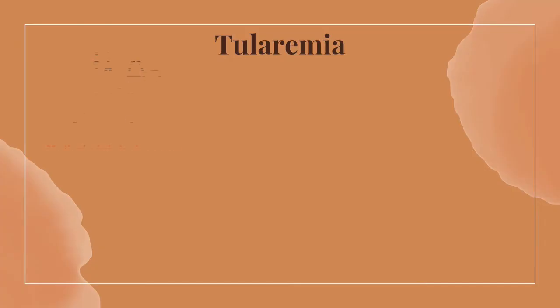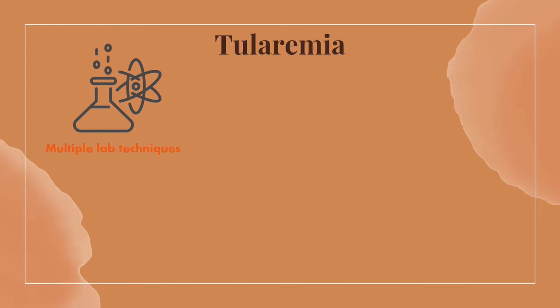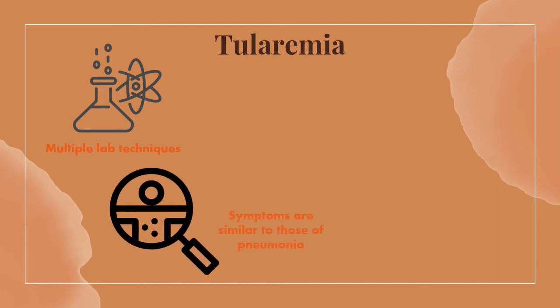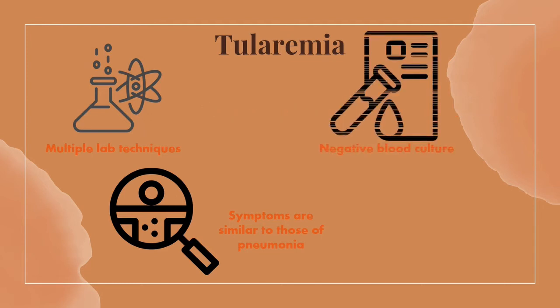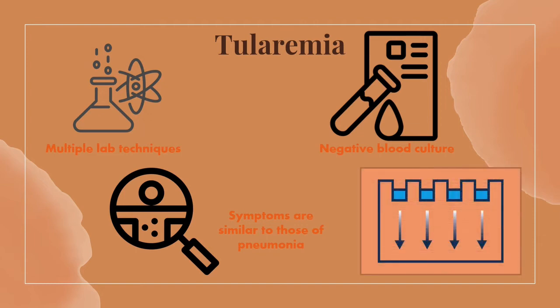Tularemia is another disease that uses multiple lab techniques, including the Western blot, to make a diagnosis. Tularemia is known as rabbit fever and is often a difficult disease to diagnose because the symptoms are often mistaken for those of common illnesses. Once a patient's blood is taken, it is run through blood cultures, including a Western blot. The bacteria F. tularensis is difficult to isolate for, so blood cultures often come back negative. The Western blot is once again used to confirm the presence of this bacteria in the blood once positive in a blood culture.